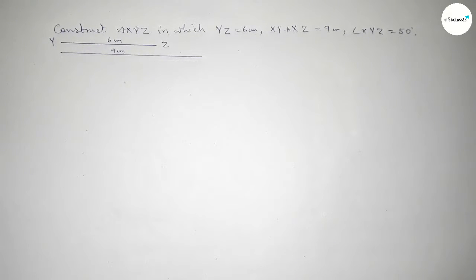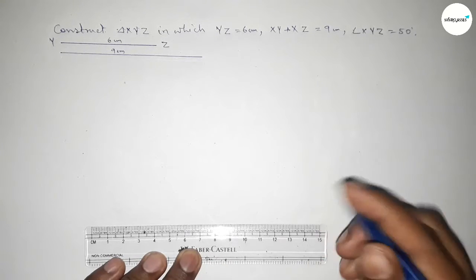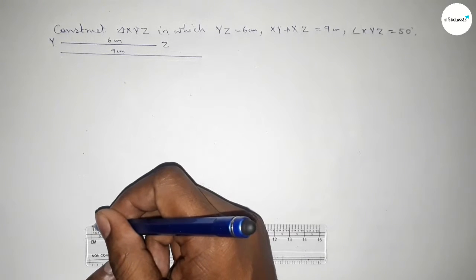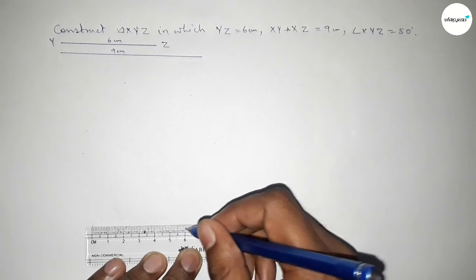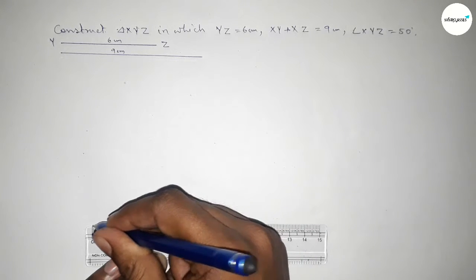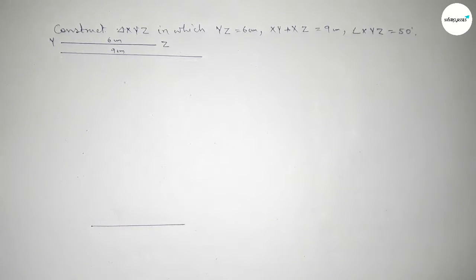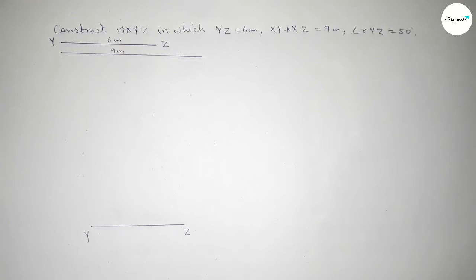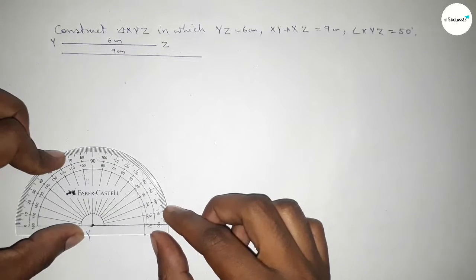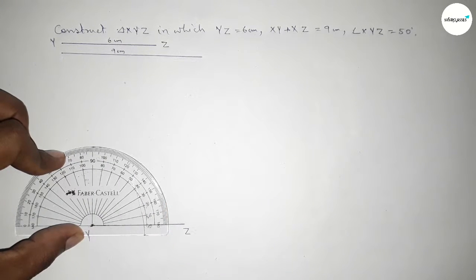Now first we have to draw here the line 6 centimeter again. So this is 6 centimeter, and taking here point Y and here Z. Next we have to draw a 50 degree angle on the point Y.